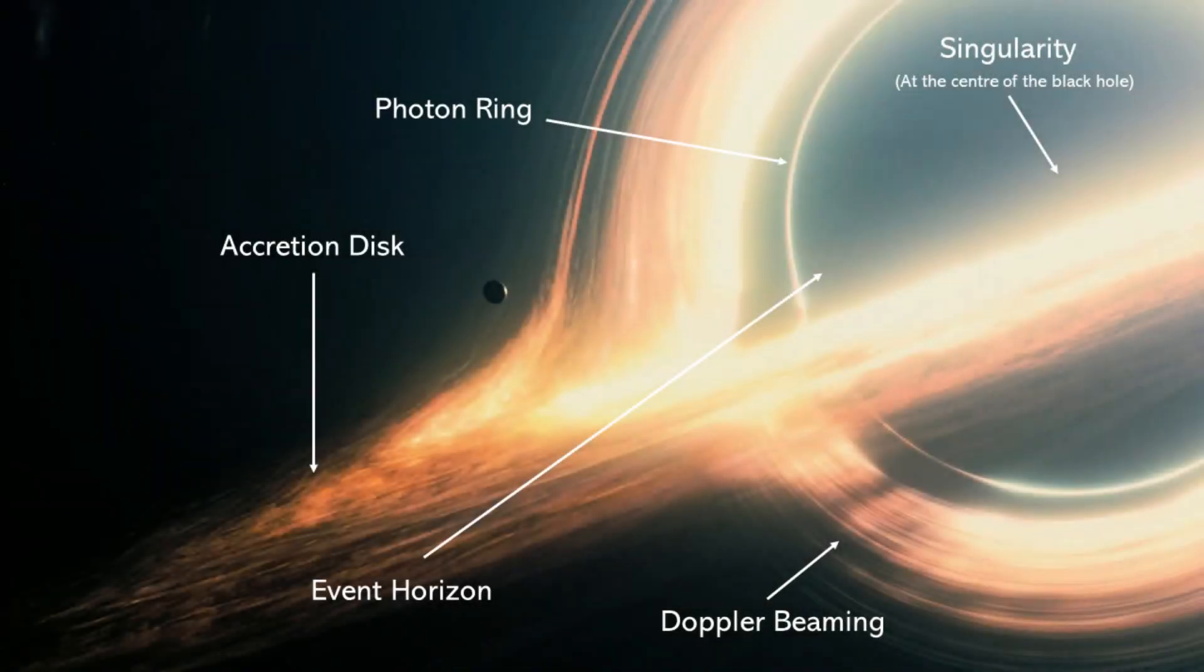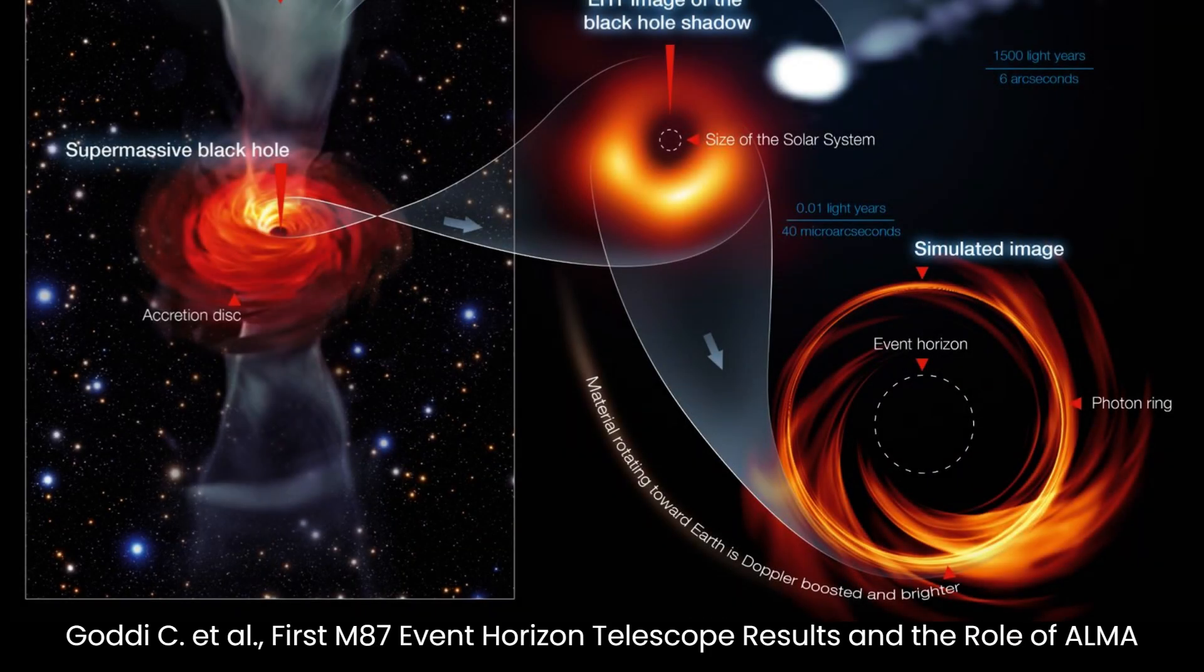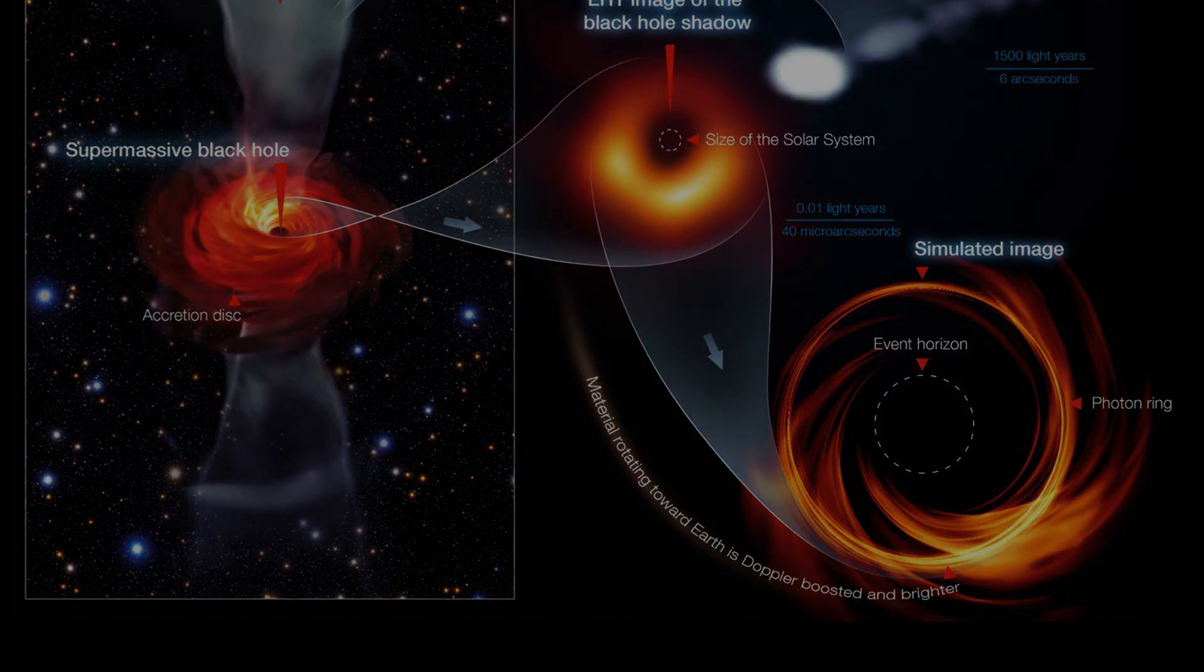Doppler beaming, also known as relativistic beaming or relativistic Doppler effect, is a phenomenon related to the motion of objects, including those near black holes, and how their emitted radiation is observed. It is a consequence of the special theory of relativity formulated by Albert Einstein, and it has implications for the study of black holes and other astrophysical phenomena.